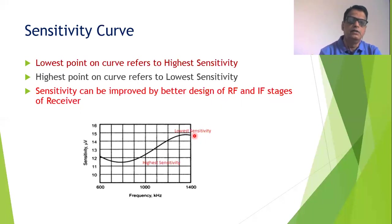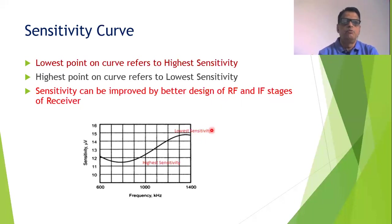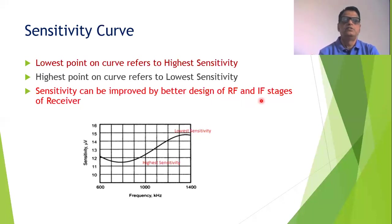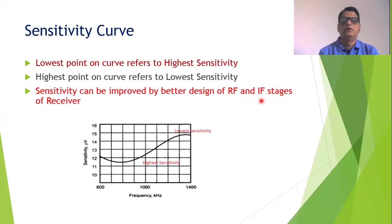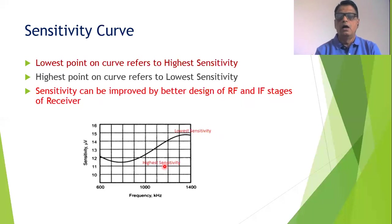The sensitivity of the radio receiver can be improved. This improvement can be done by proper designing of the RF (radio frequency) stage and the IF (intermediate frequency) stage of the radio receiver. If they are properly designed and their gain is appropriate, the sensitivity of the radio receiver will be much higher — meaning we will require only a very low amplitude signal to get a good output power.